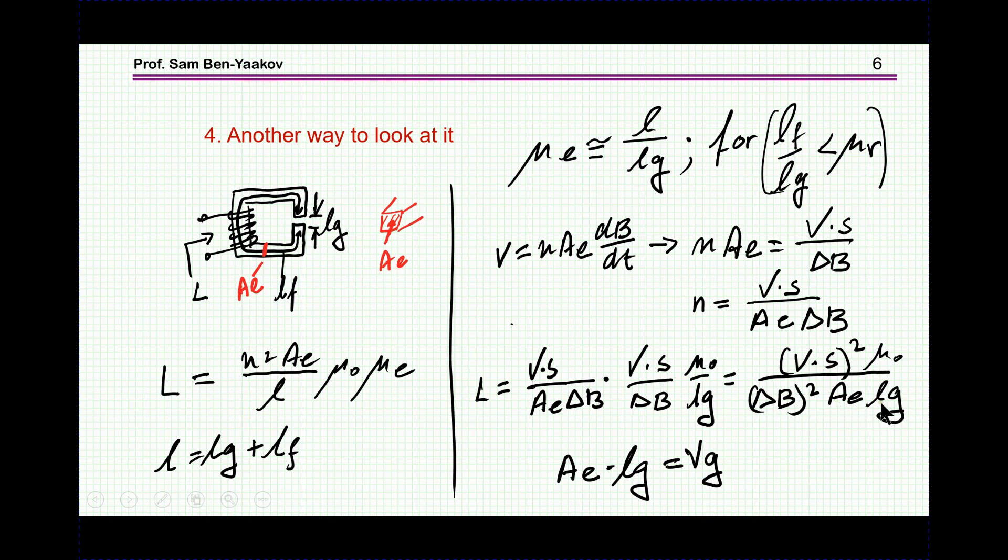So we see here a clear connection between the inductance needed and the volume of the gap. Here it is. And related to the operating condition of the core: the volt second, which indirectly dictates the current given the inductance, and delta B, which is specified for the given application.